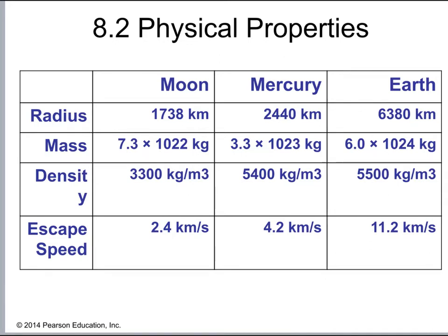First we can look at the radius, and we can note that the Moon's radius is about 1,740 kilometers, and Mercury's radius is about 2,440 kilometers, so they're comparable in size — although Mercury is a bit bigger than the Moon. The Earth's radius is about 6,400 kilometers, which is significantly larger than either Mercury or the Moon.